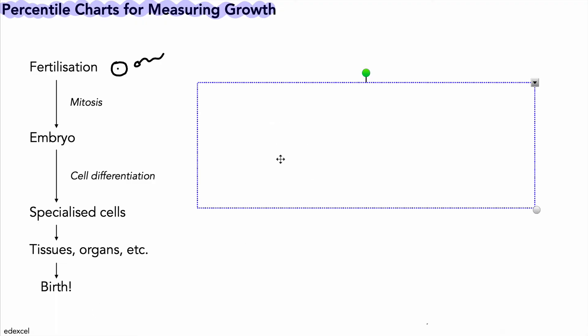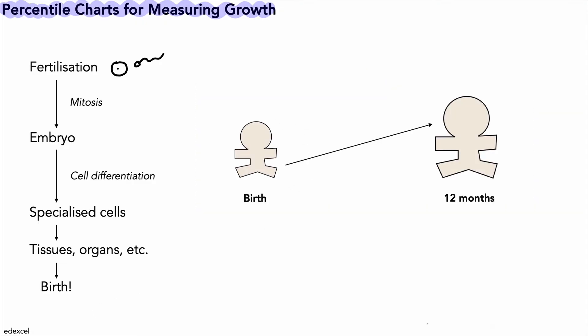Here's a diagram of our baby going from birth up to 12 months. We can use percentile charts to track the growth over that period from 0 to 12 months. Now it would help to know what the normal birth weight or birth mass should be.